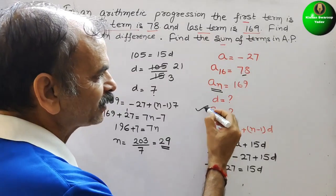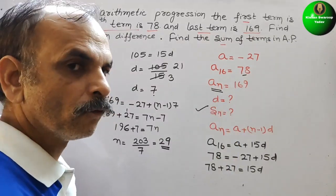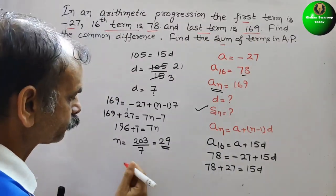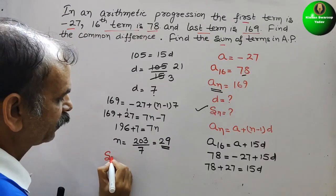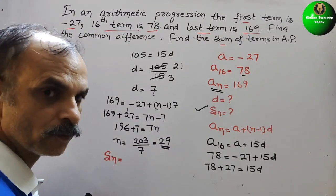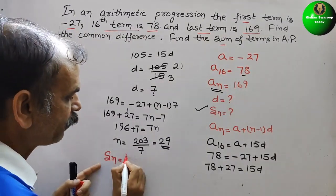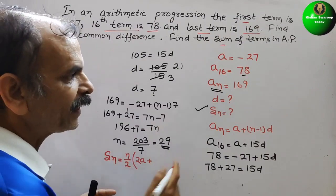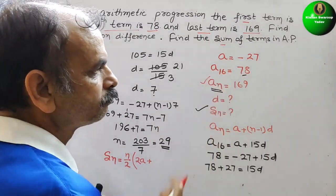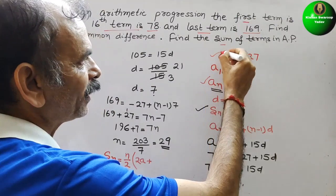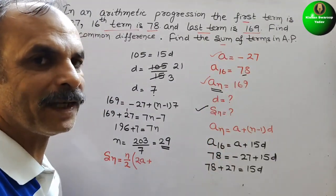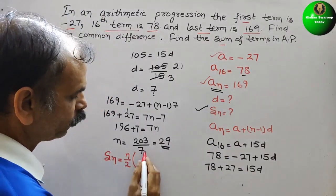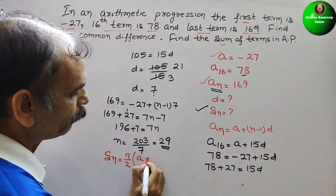Now we can find out the sum. So sum is nothing but we will write the formula here. SN equals N by 2, here comes 2A plus, or we can say N they have given, A is also given. So we will go for a shortcut formula, that is nothing but A plus L.